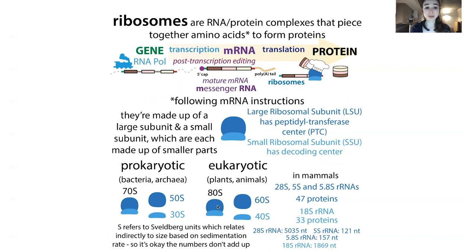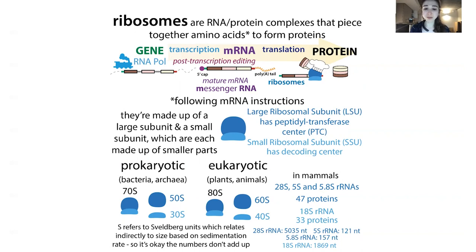Both subunits are made up of protein and RNA. In mammals, in our 60S we have three ribosomal RNAs: 28S, 5S, and 5.8S. Then we have a fourth RNA in our 40S subunit, the 18S rRNA. Some of these are really big — the 28S is over 5,000 nucleotides — while the 5S is only about 121 nucleotides. In addition to those RNAs, you have proteins: in the eukaryotic 60S there are 47 proteins, and in the 40S there are 33 proteins.